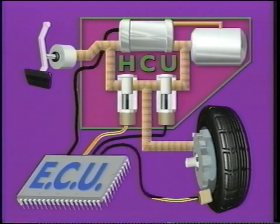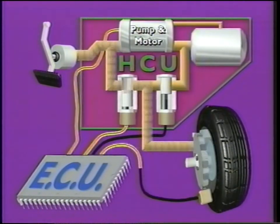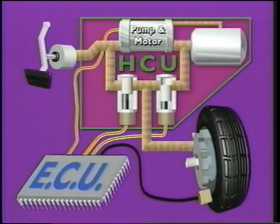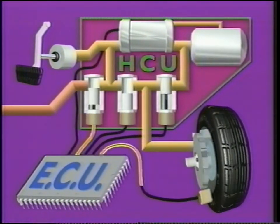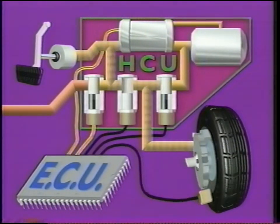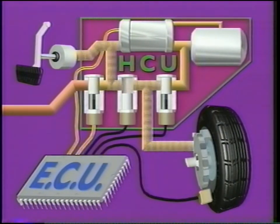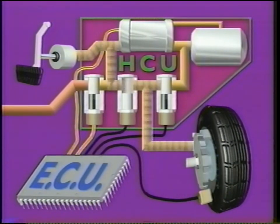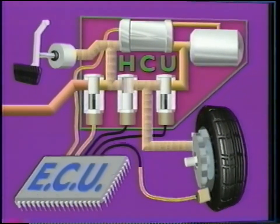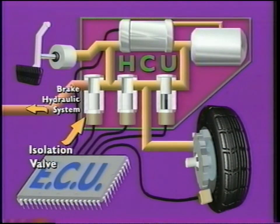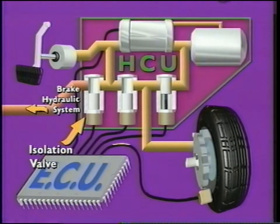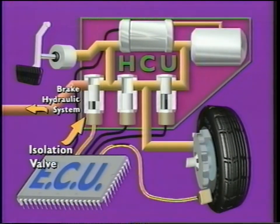When the ECU activates the pump and motor, the driver may feel the brake pedal pulsation. An ABS hydraulic control unit with traction assist uses these same components combined with additional valves to help prevent loss of traction during acceleration. The primary difference is an HCU with traction assist contains isolation valves. When traction assist is required, these valves close, isolating the hydraulic system of the drive wheel brakes.